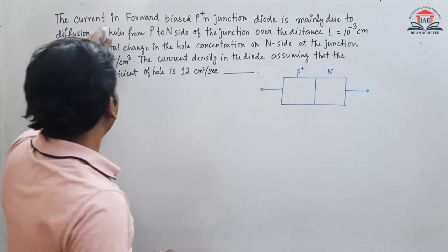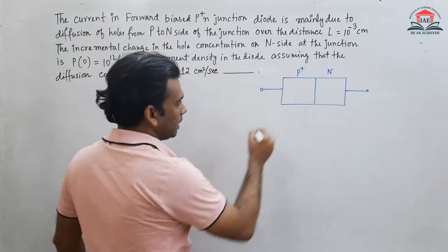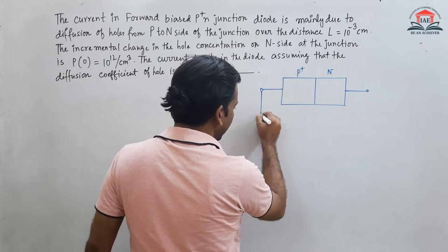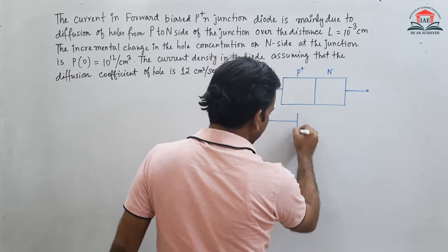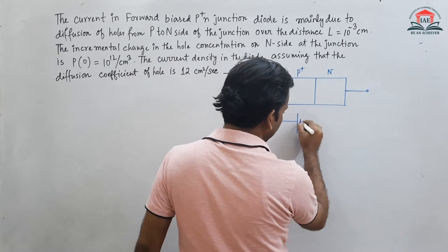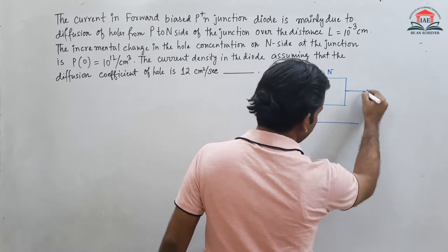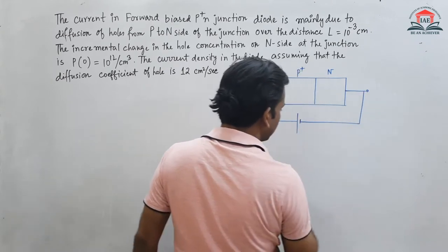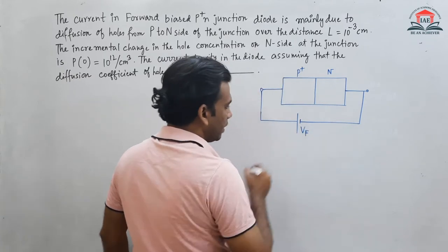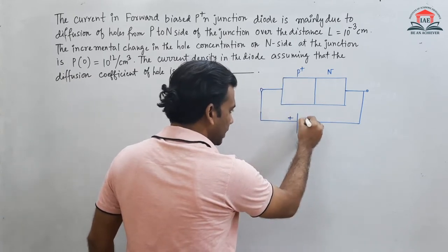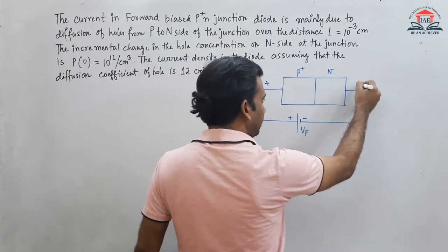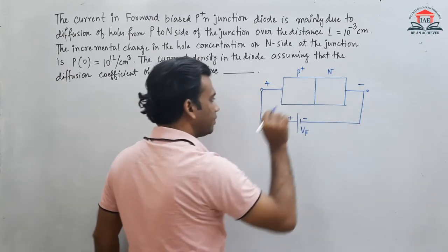Now the current in the forward bias — we apply forward bias, meaning positive goes to the P side and negative to the N side. So this is the forward bias, written as VF. This is the positive terminal and this is the negative terminal. So this is in forward bias.